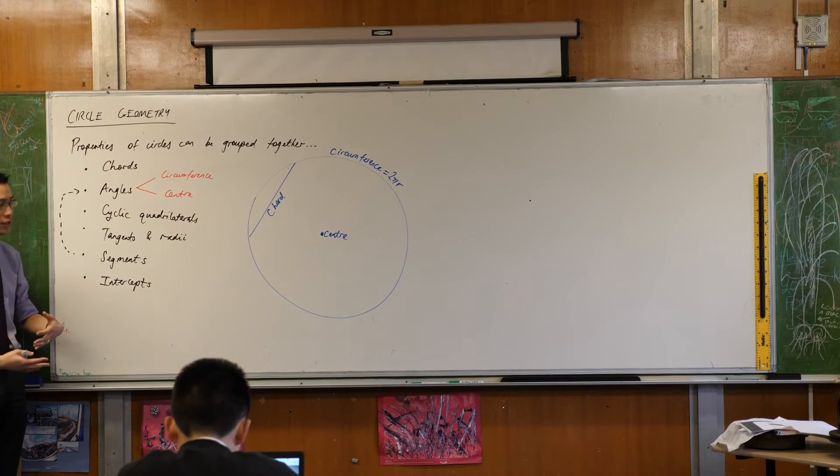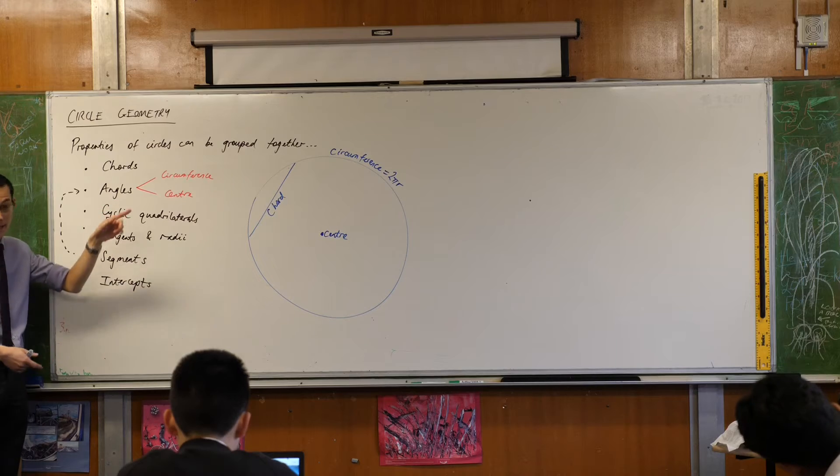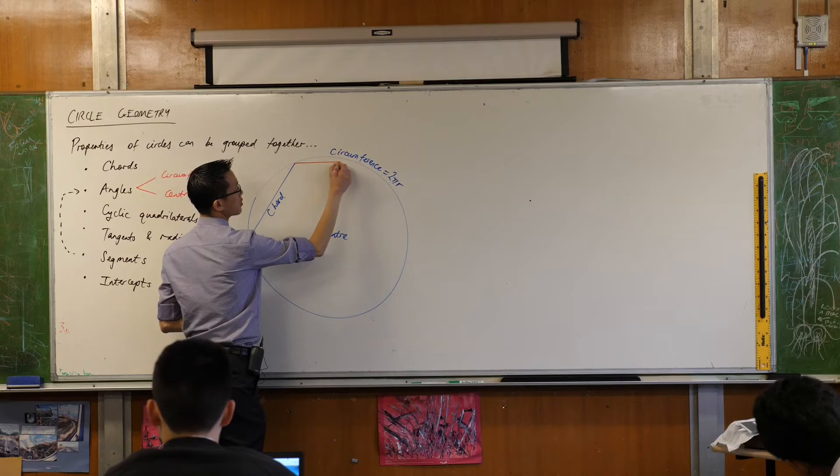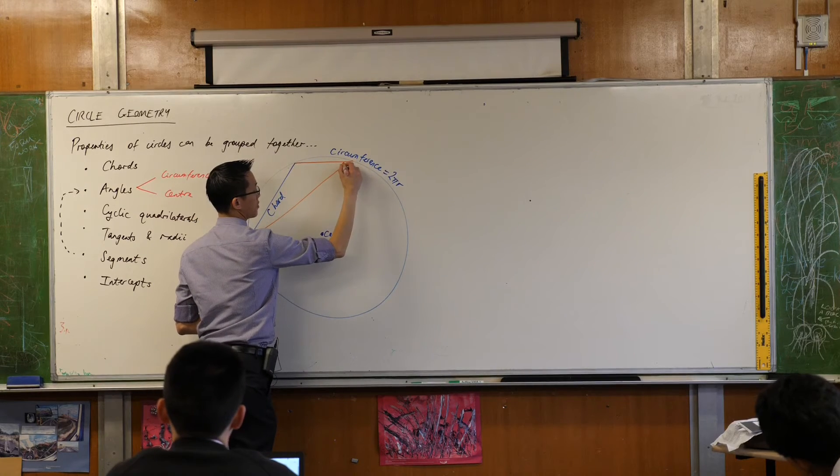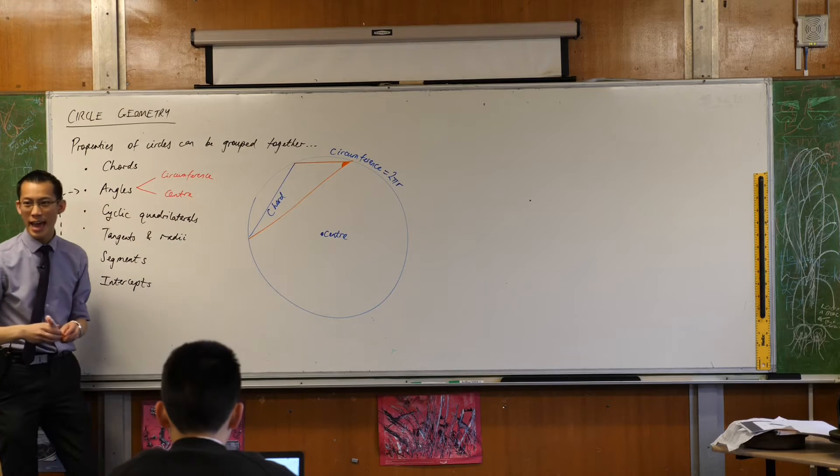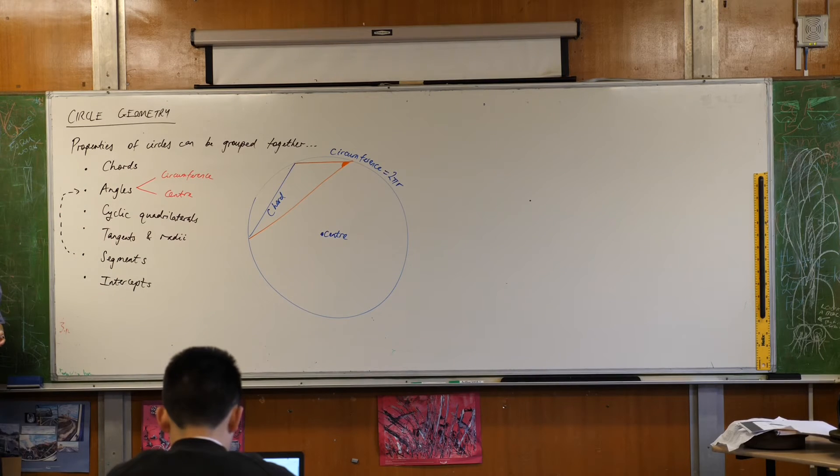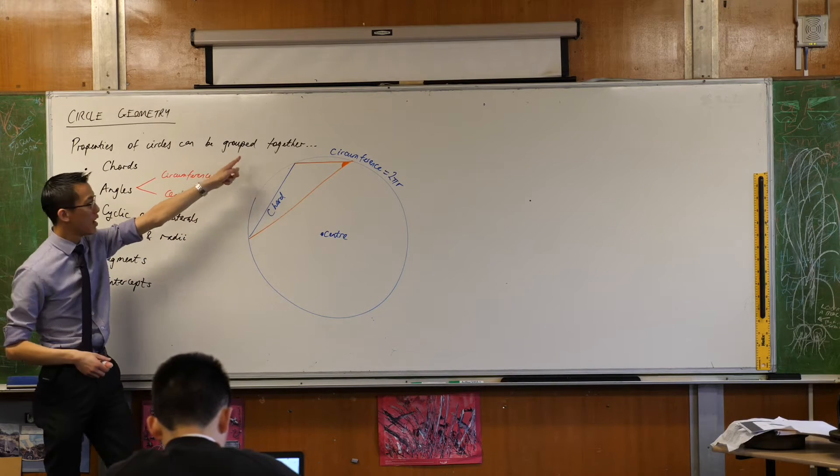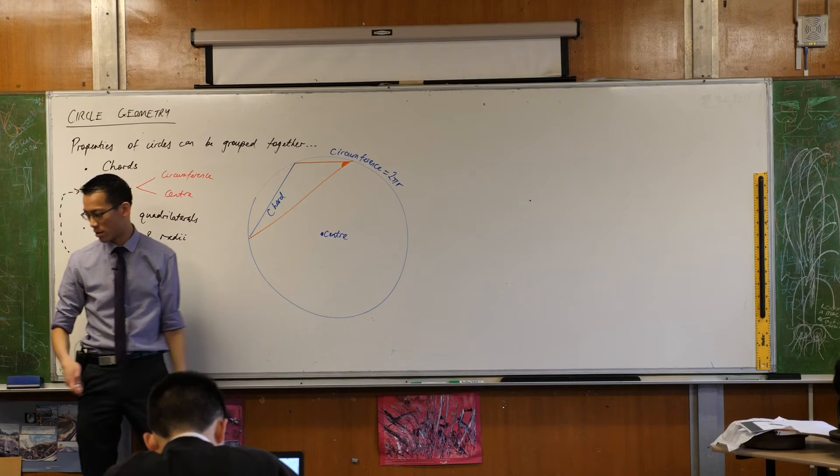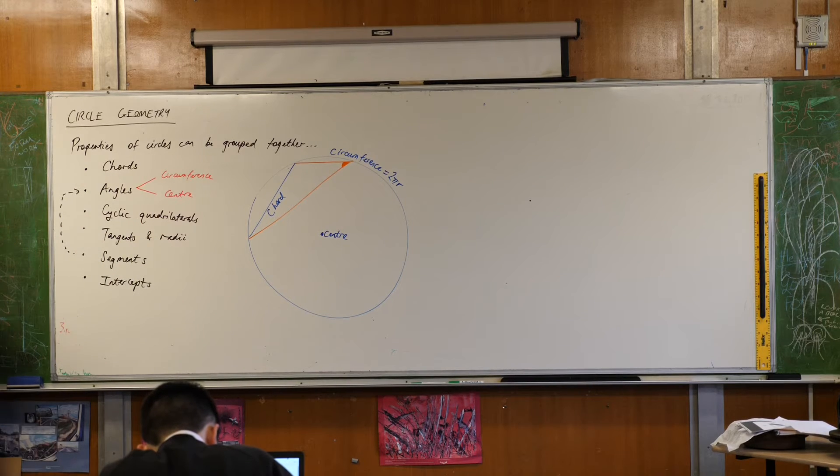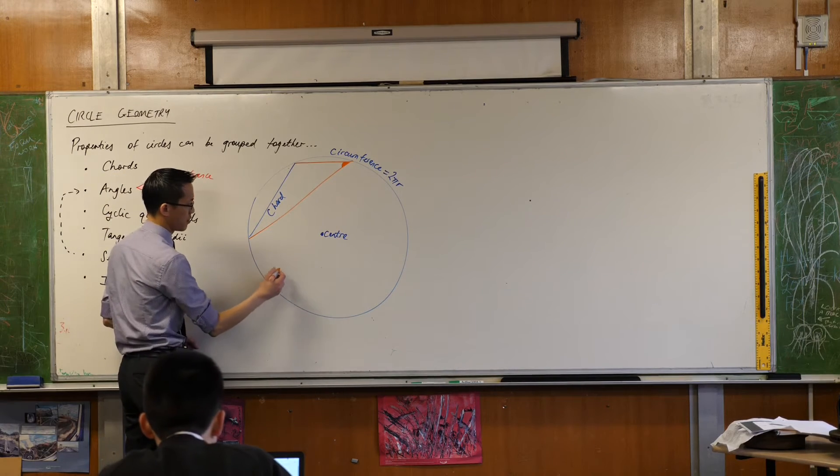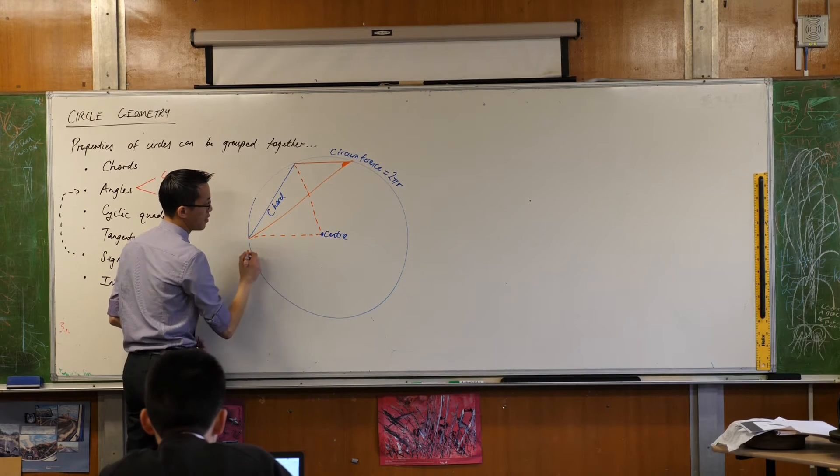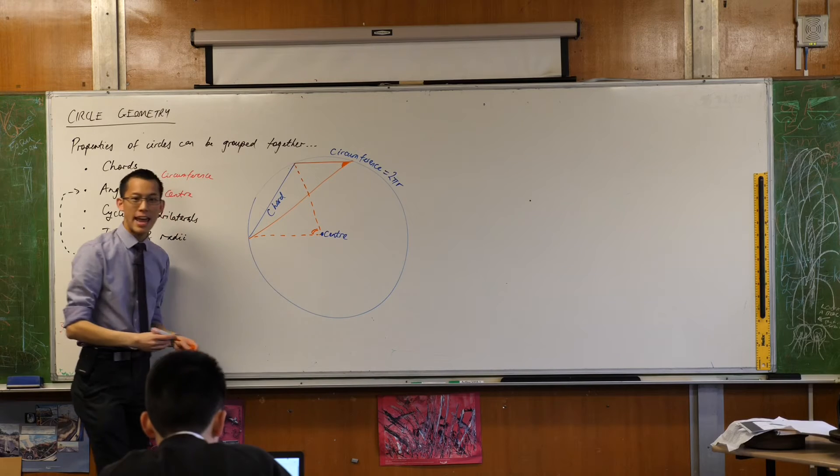We talked about angles at the circumference, angles at the center. So if you have another color, that will be helpful. Here's an angle at the circumference. That guy there. You can see it's got its legs standing on the circumference, but also its vertex, its middle point is also on the circumference. What does an angle at the center look like? Something like this. I'll draw it off the same chord. There's an angle at the center.